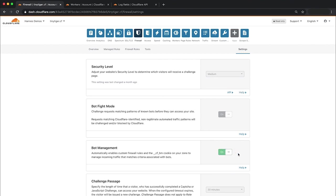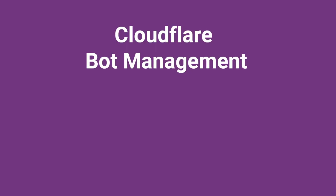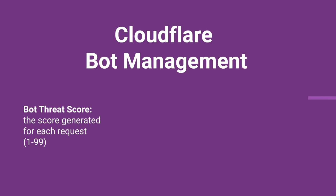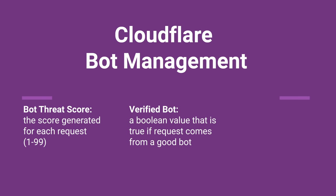For this demo, we'll use the domain tinytiger.cf. Once bot management is entitled by your enterprise account team, new variables are available to create firewall rules to detect automated traffic, including bot threat score, which is the score bot management generates for the request, from 1 to 99. Lower scores indicate the request came from a script or automated agent, and higher scores indicate the request came from a human using a standard desktop or mobile web browser.